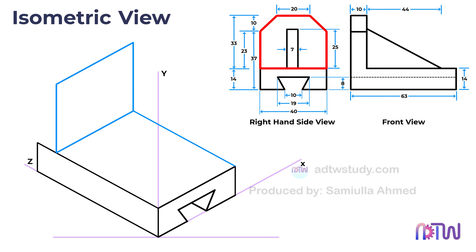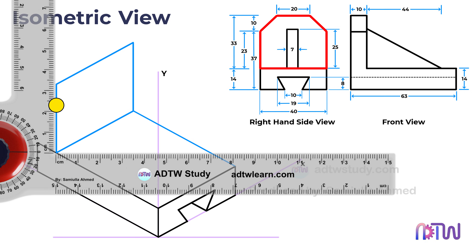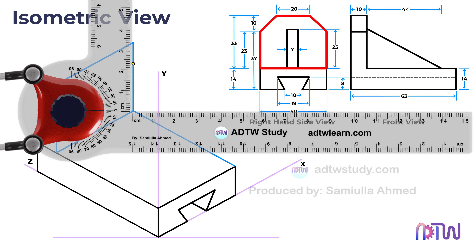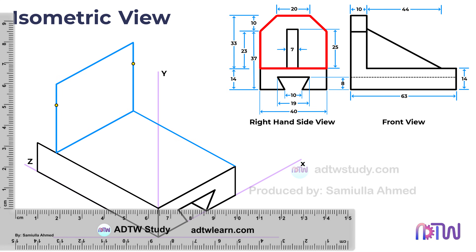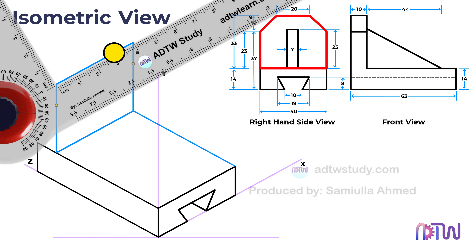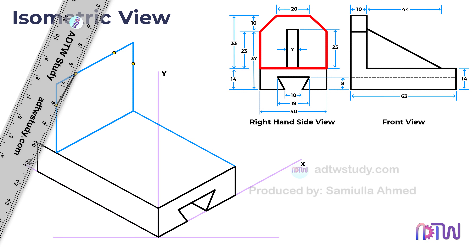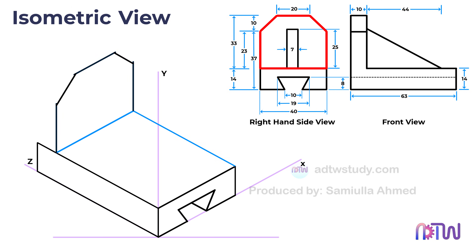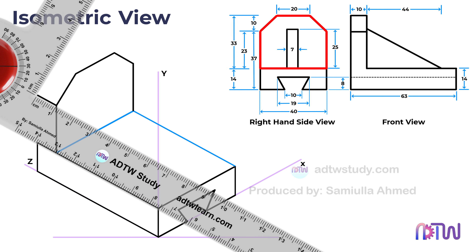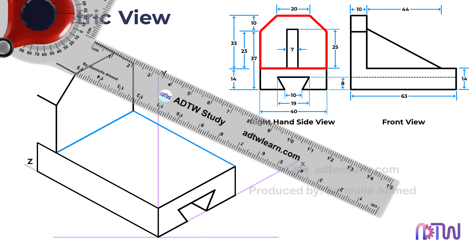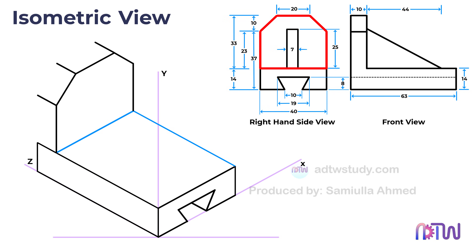Starting from the bottom of the rectangle, mark a point 23 millimeters up, and also mark points 10 millimeters away from either side of the rectangle. Using these marked points as references, draw lines connecting them to form the inclined structure. These lines represent the slanted features of the top portion. To give this portion a thickness of 10 millimeters, draw lines of length 10 millimeters parallel to the x-axis from each corner point of the portion. These lines will extend outward indicating the thickness.